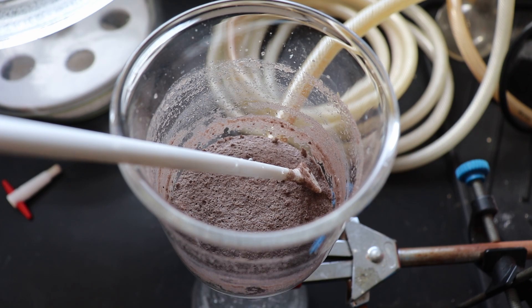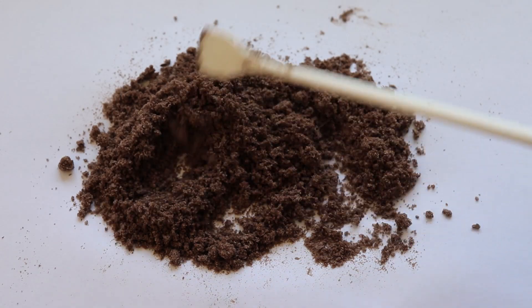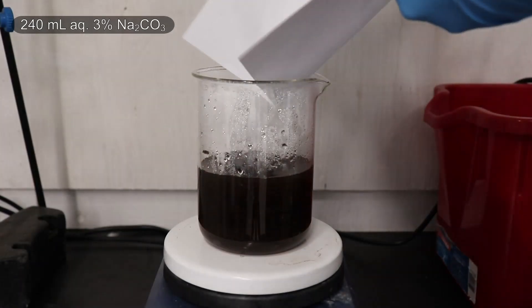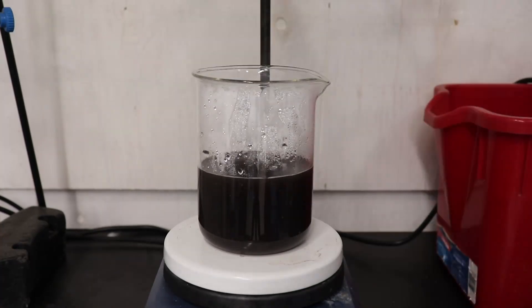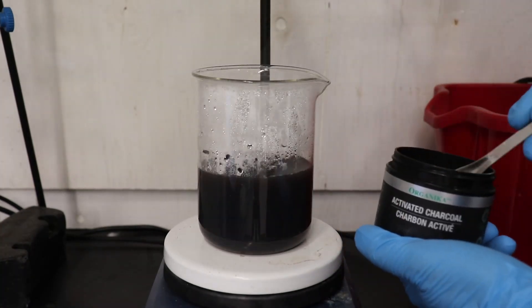After filtering, I was left with this brown solid. Next, 240 ml of a 3% sodium carbonate solution was prepared. The sodium carbonate solution was then heated until it was nearly boiling, and then the crude product was added and allowed to fully dissolve.